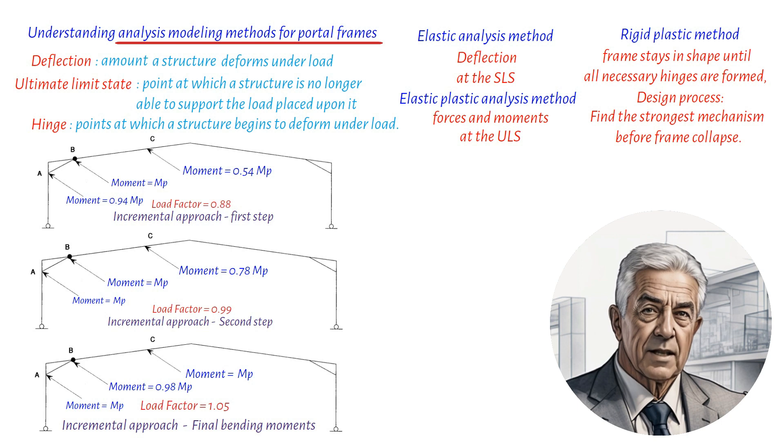In contrast, the elastic plastic method is more comprehensive because it considers the order of hinge formation and behavior between hinges. It can accurately determine the bending moment diagram at the ultimate limit state and find the critical collapse mechanism.